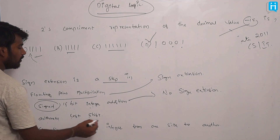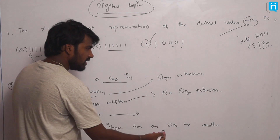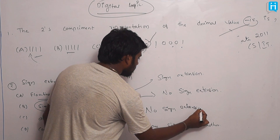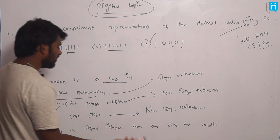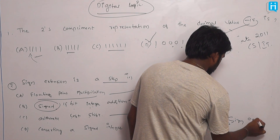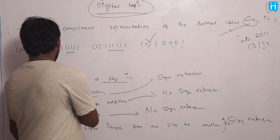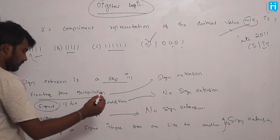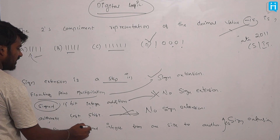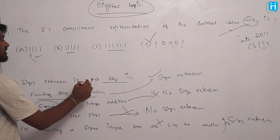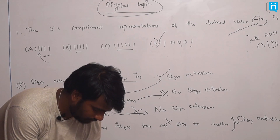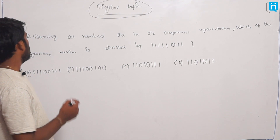When performing an arithmetic left shift, we are moving values from right to left — there is no sign extension there. When converting an integer from one size to another, there is no meaning for sign extension. So: sign extension is a step in floating point multiplication — yes; signed 16-bit integer addition — no; arithmetic left shift — no; converting signed integer from one size to another — no. The answer is floating point multiplication.